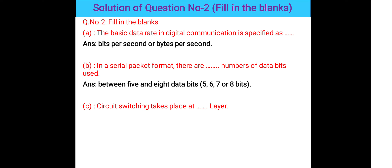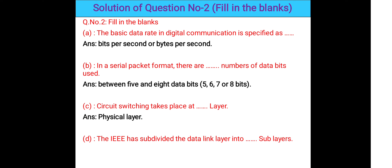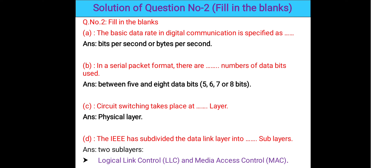Question 2c: Circuit switching takes place at the blank layer — the answer is the physical layer. Circuit switching takes place at the physical layer of the OSI model. Question 2d: IEEE has subdivided the data link layer into blank sub-layers — the answer is two sub-layers: Logical Link Control (LLC) and Media Access Control (MAC).